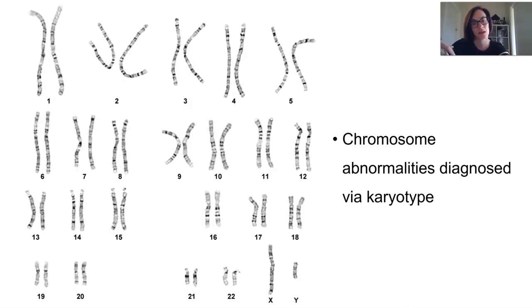Regardless of the aneuploidy or chromosome abnormality, the most common way to diagnose abnormalities is through the use of a karyotype. This is one of the loveliest karyotypes I've ever seen or worked on. You can see all the homologous pairs are lined up.